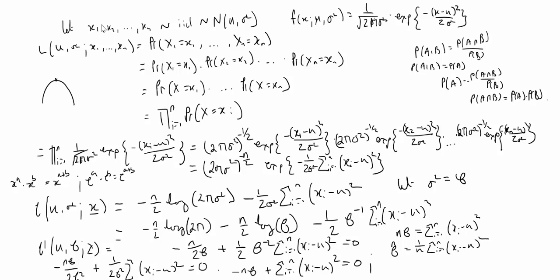Since we don't know mu, we're going to have to use the approximated value for mu, which is the sample mean x-bar. To account for this substitution, we divide by 1 over n minus 1 instead of 1 over n, so the population variance is approximated by the sample variance in this case.